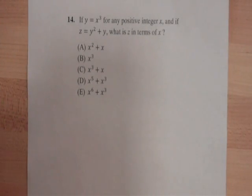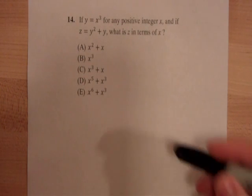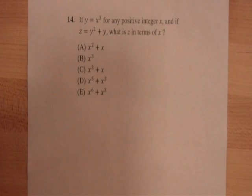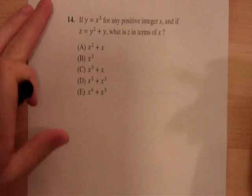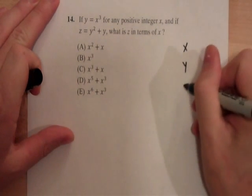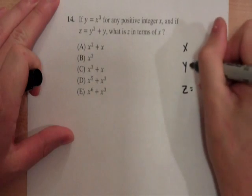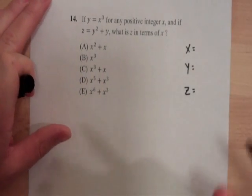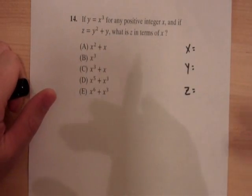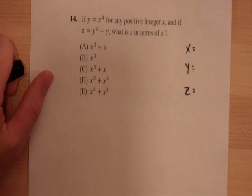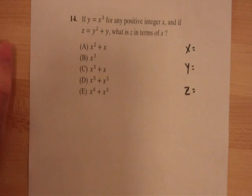Okay, so the first one we're going to do is a number 14, and that's sort of medium difficulty. Now, if you look at this question, it says y equals x cubed for any positive integer x, and if z equals y squared plus y, what is z in terms of x? So, ostensibly, we have three unknowns in this case. We have an x, we have a y, and we have a z, right? And if you look at the question, we only have two equations. So, here's a situation in which we have more unknowns than equations. I'm going to show you two different ways of solving this question.